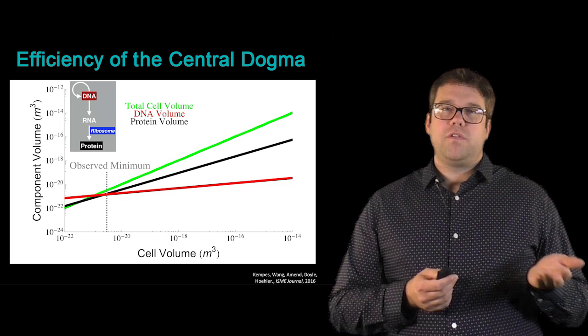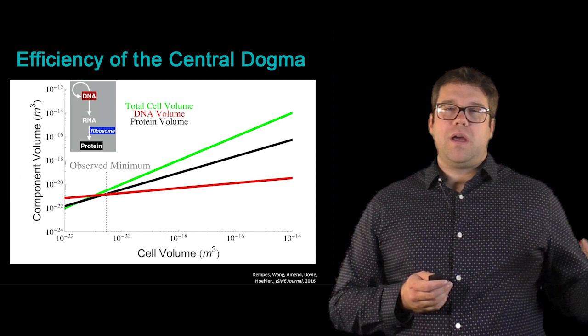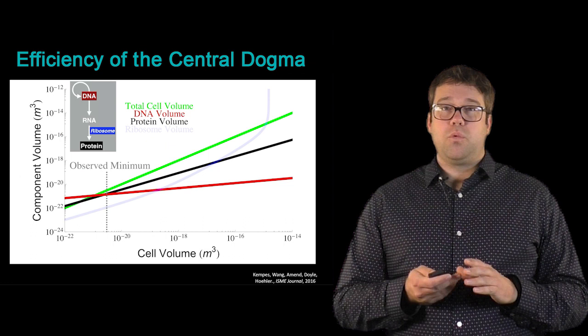Turning to proteins, we find that they also follow a power law across all of bacteria. Again, at the small end, they're taking up a huge amount of cellular volume and becoming more dilute as cells become larger.